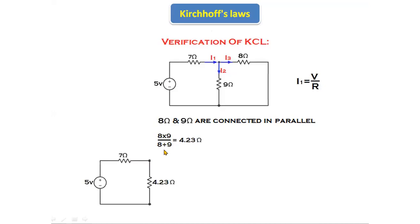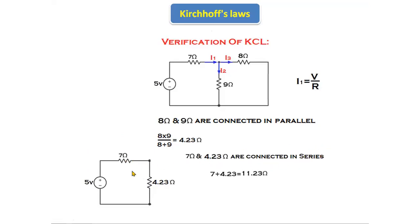Now in the redrawn circuit, 7 ohms and 4.23 ohms are connected in series. The formula for series connection is R1 + R2, so 7 + 4.23 = 11.23 ohms. The total resistance is 11.23 ohms.